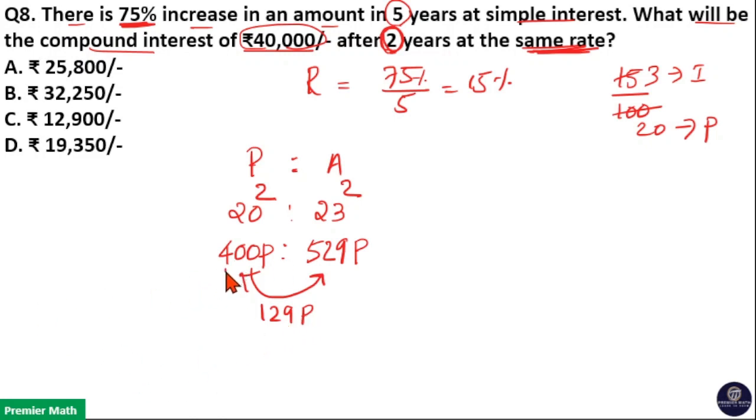Here 400 parts, that is the principal, is equal to ₹40,000. So equate 400 parts with 40,000. Now you can see 400 parts equals 40,000, which means 400 times 100 is 40,000. So 1 part is equal to 100.